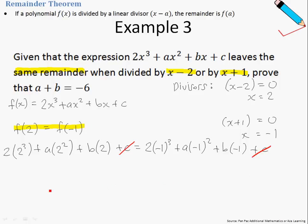Then let us simplify. We have 16+4a+2b=-2+a-b.